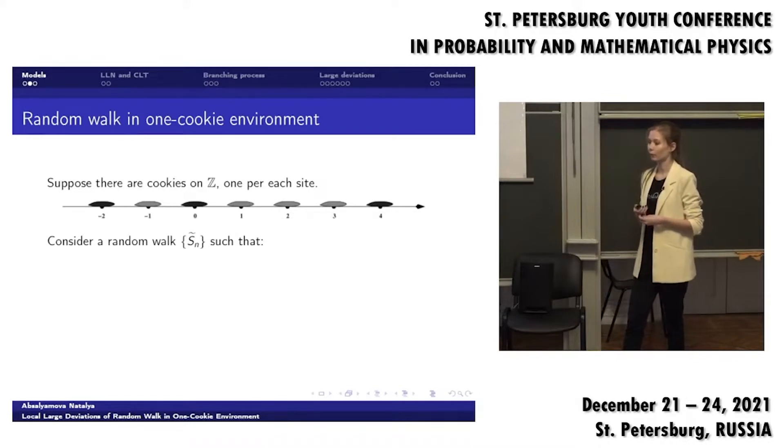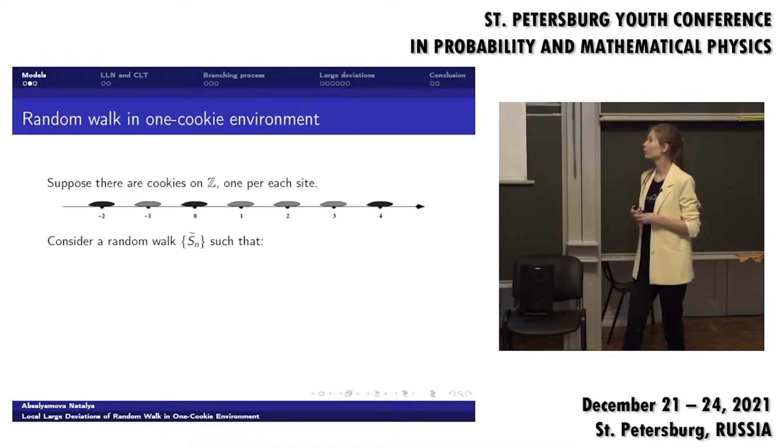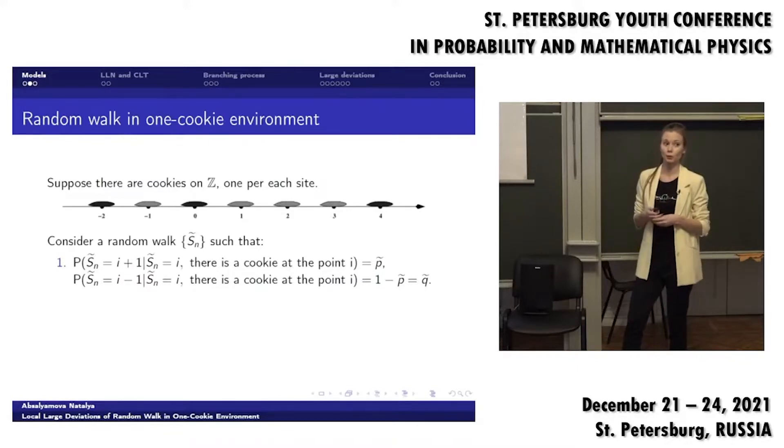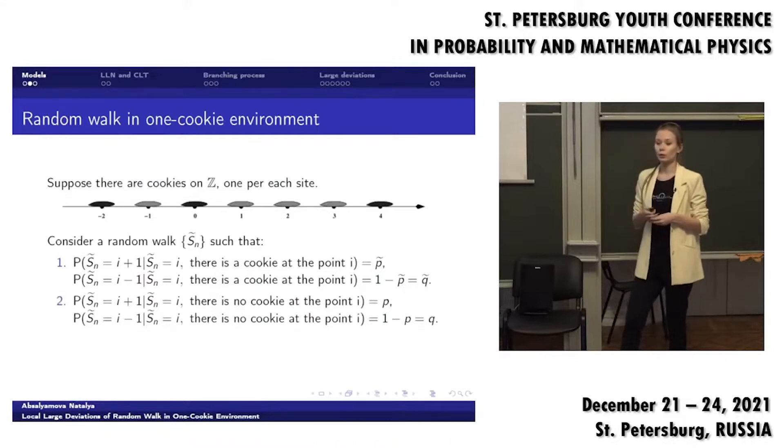Now let me introduce you to a model with one cookie. Suppose that there is one cookie at each point of the line. Consider a random walk tilde S_n such that if there is a cookie at the point, then our particle comes to the point, eats this cookie and goes to the left with probability tilde p and to the right with probability tilde q. And if there is no cookie at the point, then the particle goes to the left or to the right with probabilities p and q like in simple random walk.